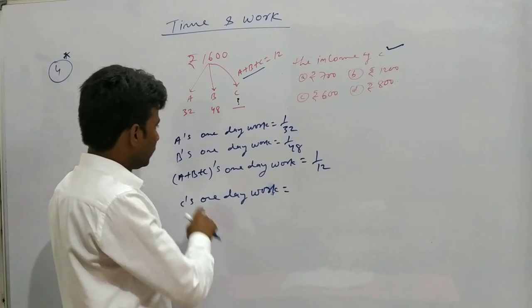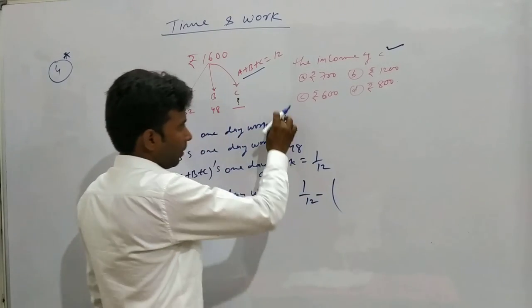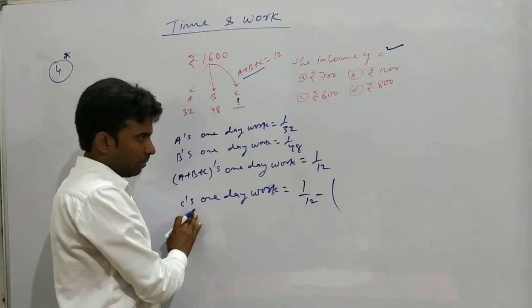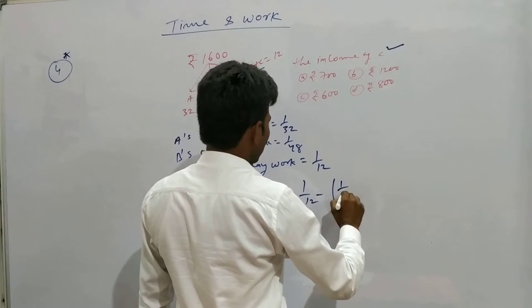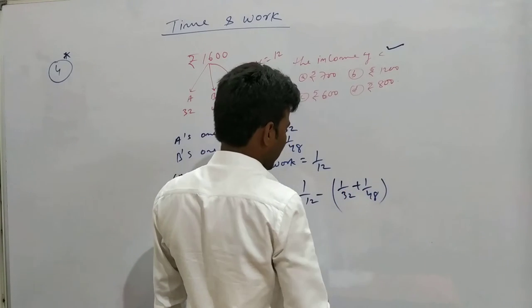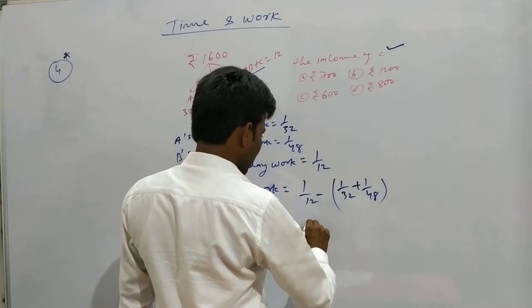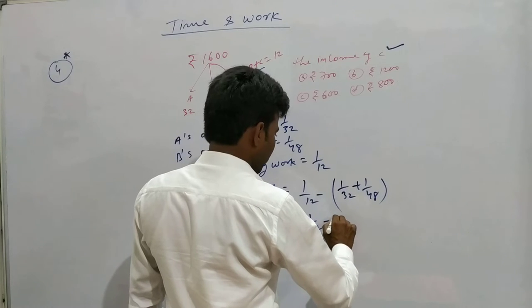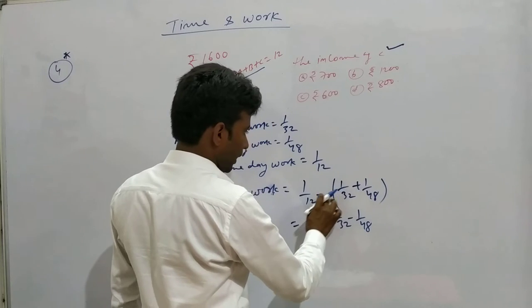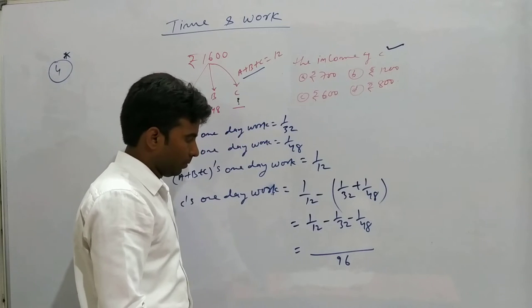C's one day work equals one upon 12 minus one upon 32 minus one upon 48. Taking LCM, we get 96.